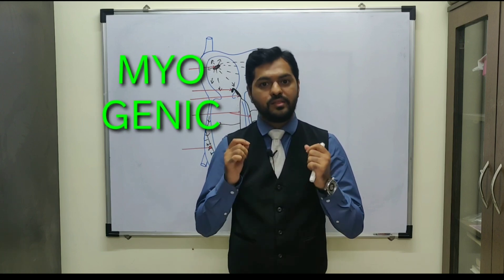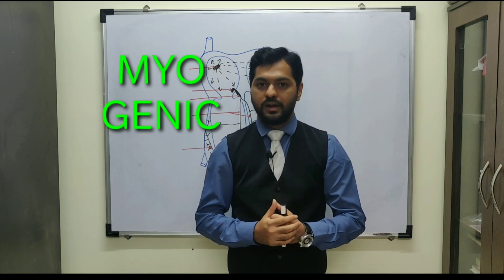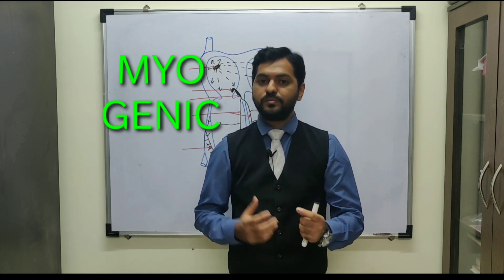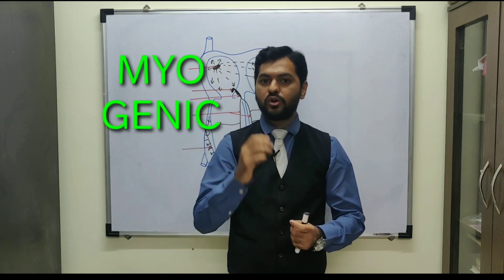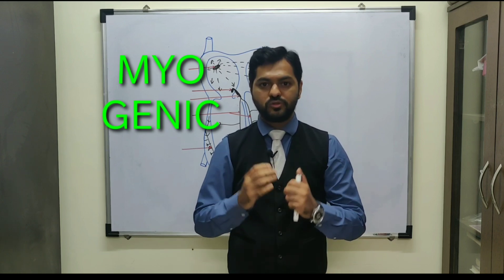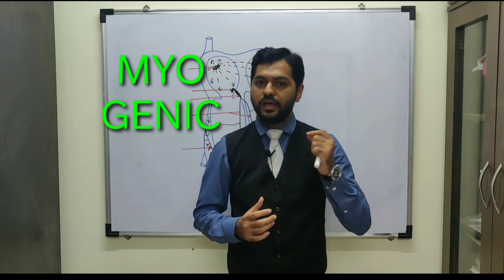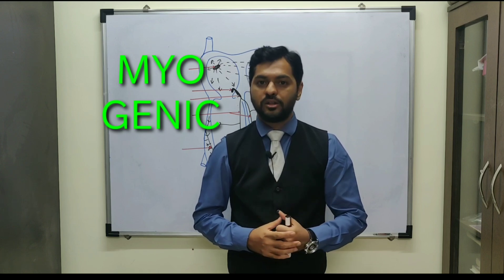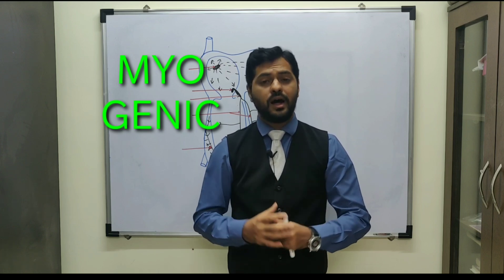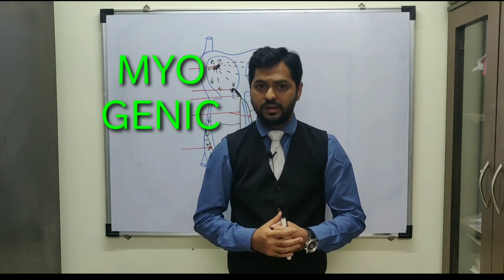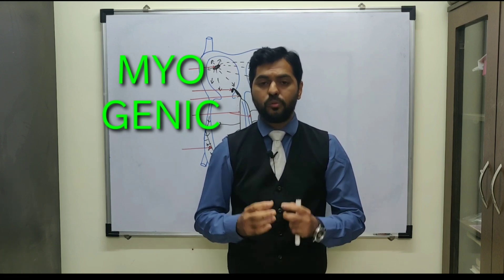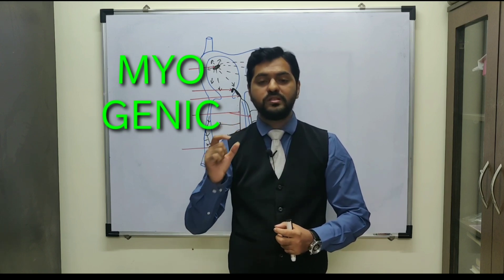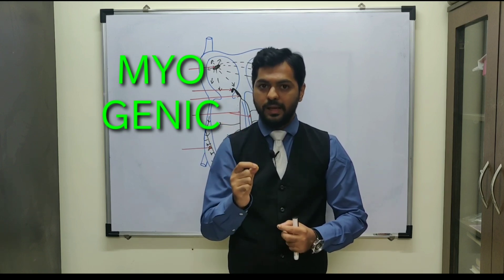The vertebrates have a myogenic heart, whereas certain invertebrates have a heart where the brain controls the heartbeat production. In invertebrates like some annelids and most arthropods, their heart is known as a neurogenic heart. In humans, it is known as myogenic because 'myo' means muscle - so it is a muscle.